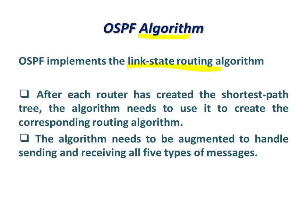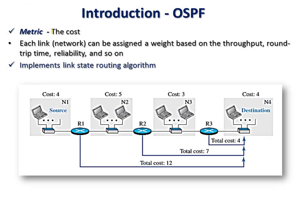OSPF follows the link state routing algorithm: routers flood information to prepare the link state database, then use Dijkstra's algorithm to find the shortest path and build the least cost tree. After each router creates its shortest path tree, it uses it to build its forwarding table. The cost metric is assigned to each link in the network, and Dijkstra's algorithm determines the shortest path from source to destination. OSPF is implemented in intra-domain network systems. Thank you.